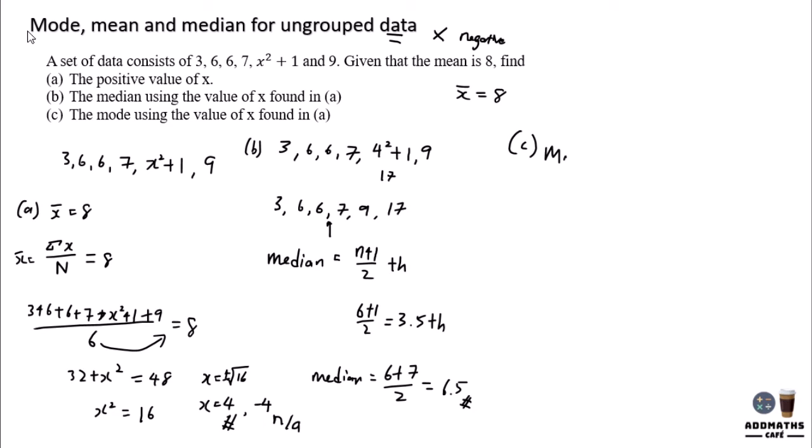To find mode, it is the highest frequency. So what does frequency mean? It means that 3 happening for once, 7 happening for once, 17 happening for once, and 9 happening for once. But 6 happening for twice. So mode is your 6, and it has the highest frequency.